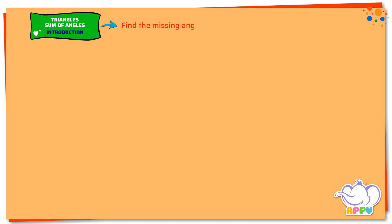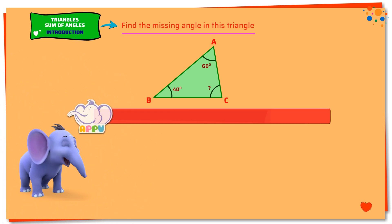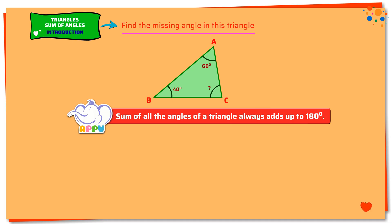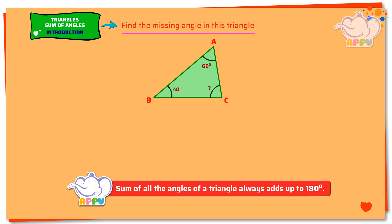Find the missing angle in this triangle. Sum of all the angles of a triangle always adds up to 180 degrees. In this triangle ABC, we see that angle A equals 60 degrees and angle B equals 40 degrees. We need to find angle C.